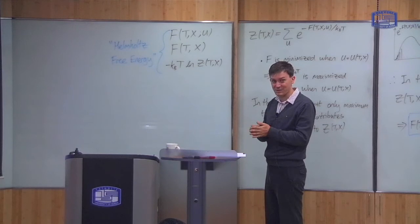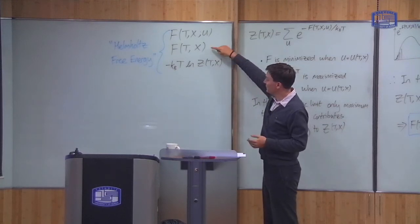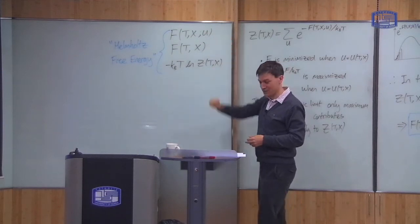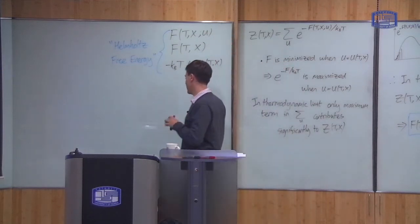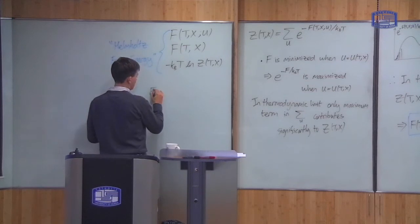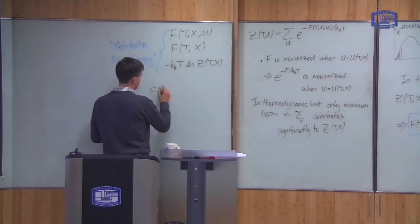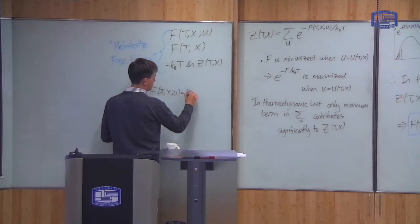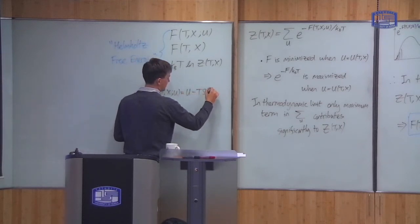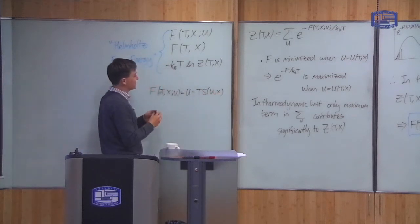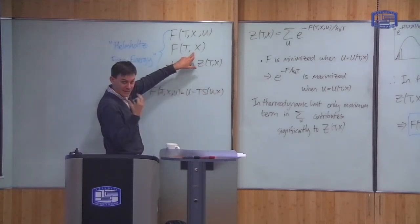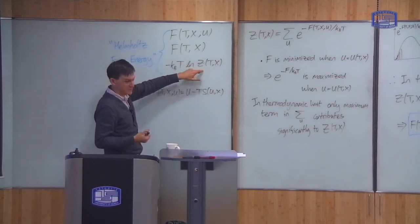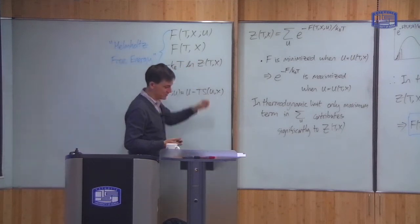In this class, I'm going to be quite precise. F(T, X) is the minimum value of the function F(T, X; U), where F(T, X; U) is defined as U minus T times the entropy S(U, X). The minimum value of this function is what I call F(T, X). In the thermodynamic limit, it's the same as -k_B T ln(Z), but only in the thermodynamic limit.